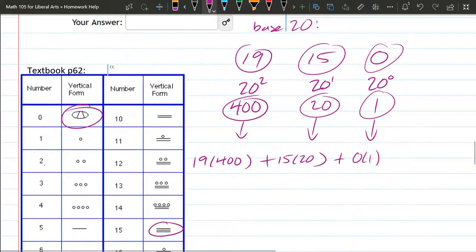We just have to add these together. 15 times 20, that's 300. 19 times 400.